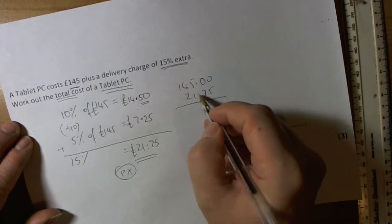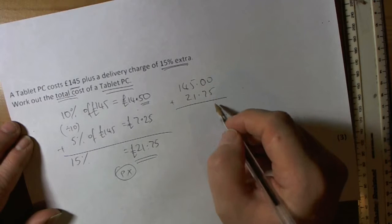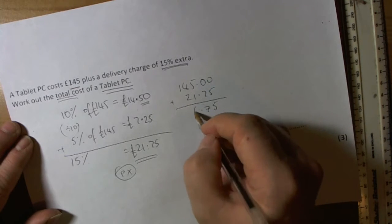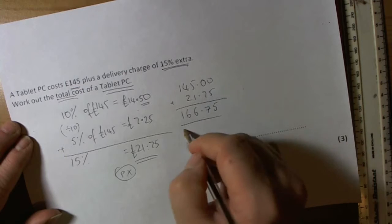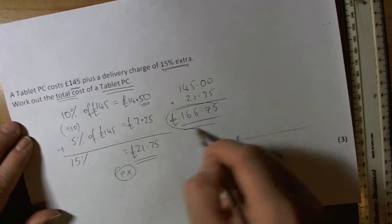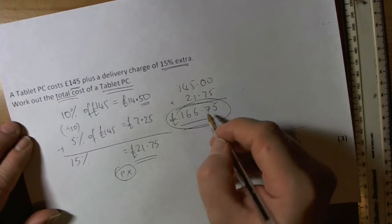Again, notice we line up those decimal points when we're adding. So 5, 7, 6, 6, 1. The final answer to this question is £166.75.